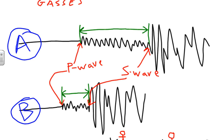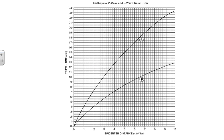On page 11 of your reference tables there's a chart that shows how fast P waves and S waves travel and, more importantly, their relationship to each other. Let's use an example: suppose we have a five-minute difference between the P wave and S wave on a seismogram. We can use that chart to find out how far away the earthquake is.